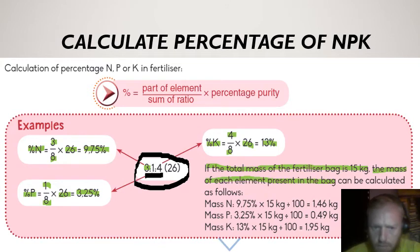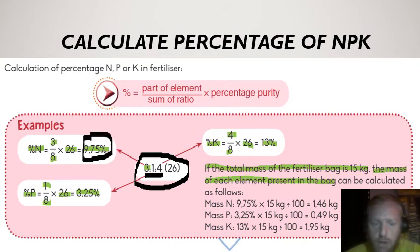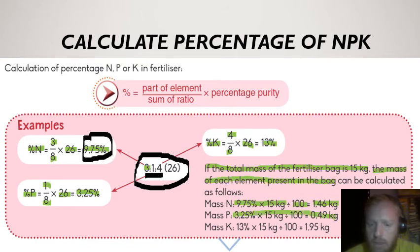They can also ask you to work out the mass of each element if the total mass of the fertilizer bag is 15 kg. All you do is take the percentage — 9.75 for nitrogen — multiply it by the total mass of the bag (15 kg), and divide by 100. That gives you 1.46 kg of nitrogen in this 15 kg bag. You do the same for phosphorus and potassium. These calculations are quite easy.